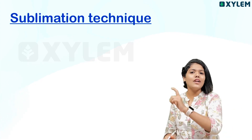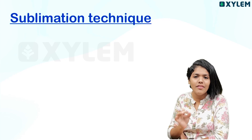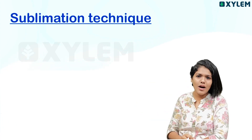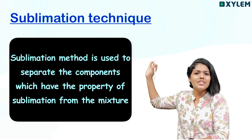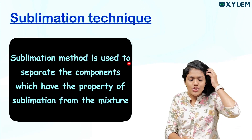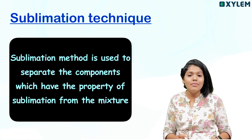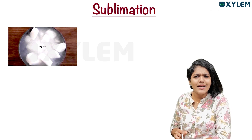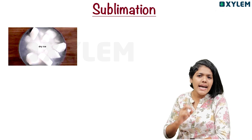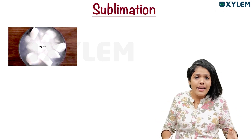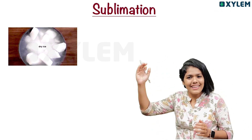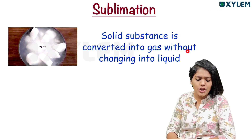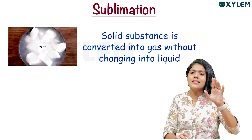The solid substance is directly converted to gaseous state without forming liquid — not passing through the liquid state at all. Solid goes directly to gas. Sublimation technique is used to separate components which have the property of sublimation from the mixture. For example, dry ice is solid carbon dioxide. Solid substances converted into gases without changing into liquid are known as sublimating substances. That process is known as sublimation.